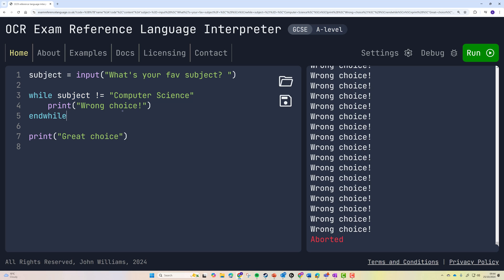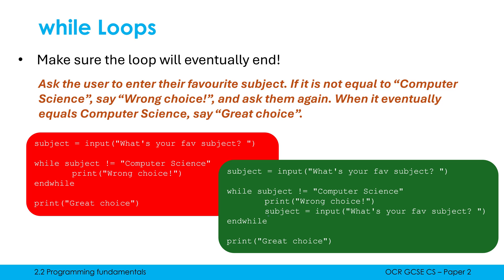Our condition never becomes false because subject never gets reassigned. We need to reassign subject in our while loop to at least give it a chance to become false eventually. So the corrected code just has that variable assignment copied inside the while loop as well. So we're giving our user a chance to re-enter a value which does equal computer science. If they re-enter a value which does equal it, this condition then becomes false and the while loop will end. But unless I give the user a chance to change it, it will never end and it will become an infinite loop, which isn't good.